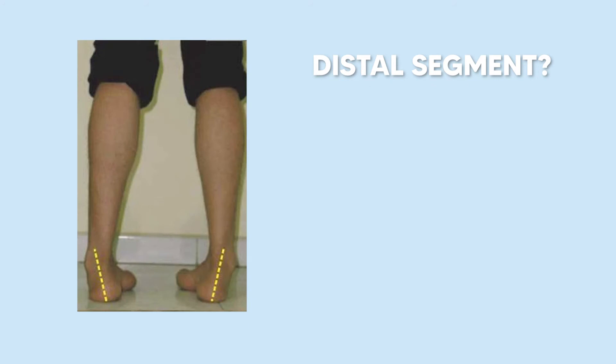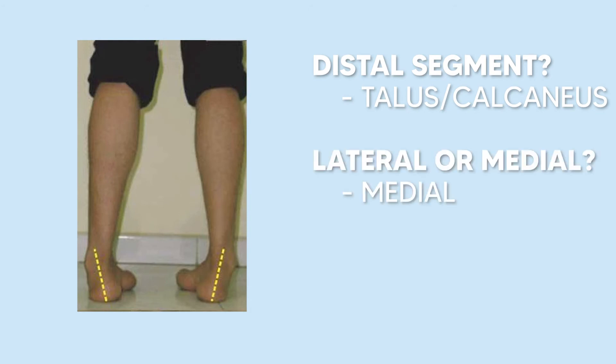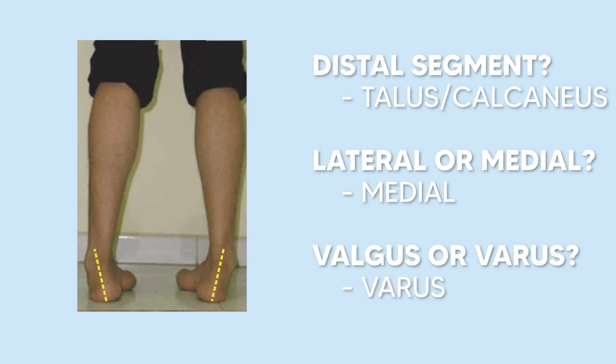For this ankle, we look at the distal segment as always, which would be the talus or the calcaneus. We can see these are angled more medially, and we know valgus is lateral, so if it's medial it must be a varus. This would be described as a hindfoot varus.